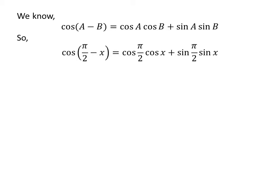Let us apply the above identity for cosine of half of pi minus x. Here a is half of pi and b is x. So cosine of half of pi minus x is equal to cosine of half of pi times cosine of x plus sine of half of pi times sine of x.